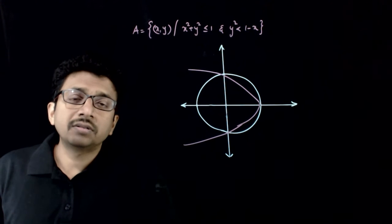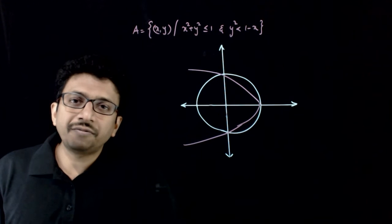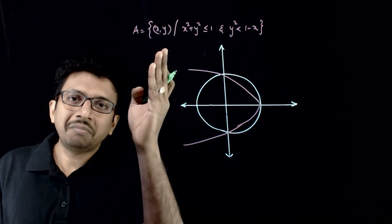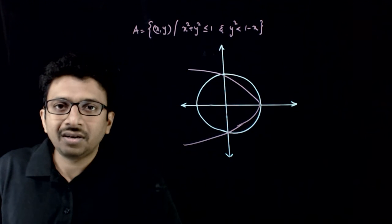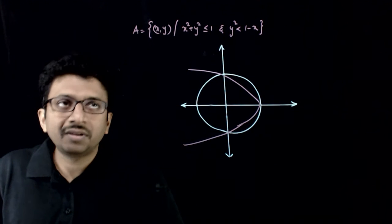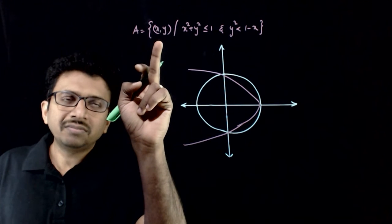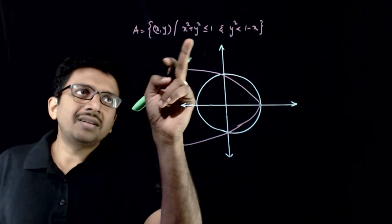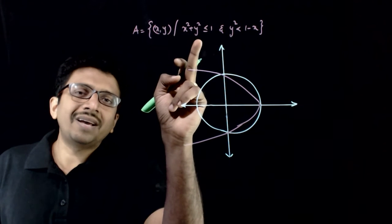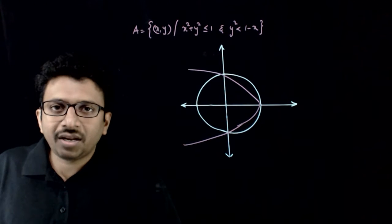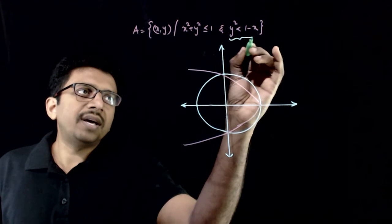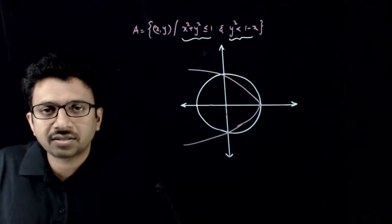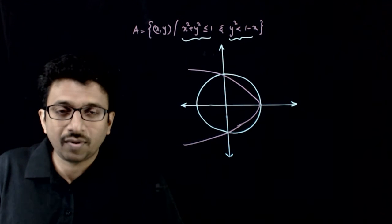Welcome students. In this question, you are asked to find the area described by this definition. Area is equal to point (x, y) such that x² + y² is less than or equal to 1 and y² is less than 1 minus x. You have two inequalities.